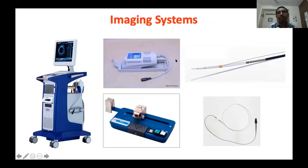Starting with some important things about imaging systems: the imaging system has three parts. First is the console — the console is the source of electrical energy for the transducer, and in addition it also serves as a display monitor and a storage device. So three functions: provides electrical energy, display, and storage.